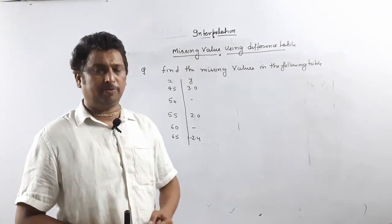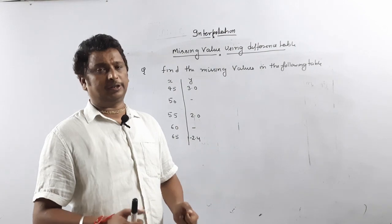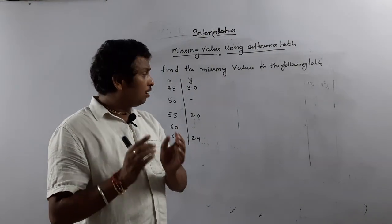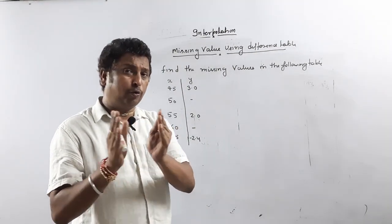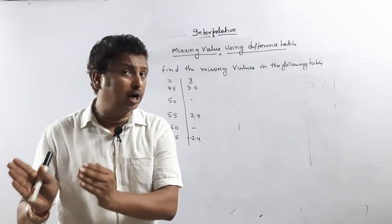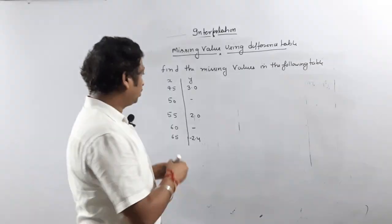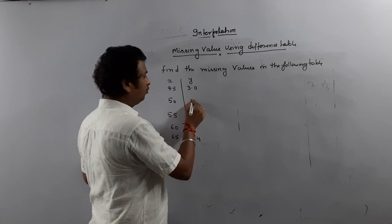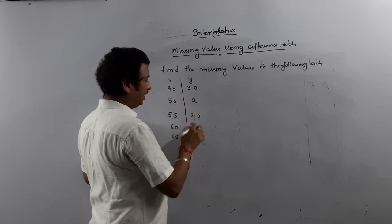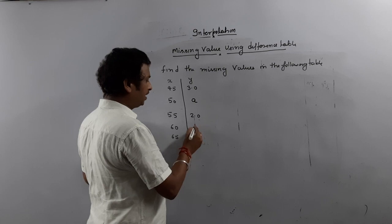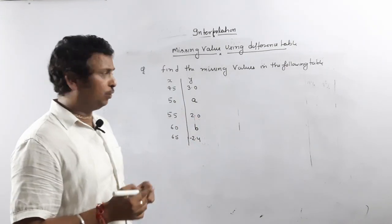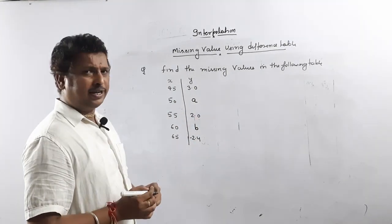And then take that third order difference equal to 0. This is the fundamental theorem for difference calculus — you have to go up to third order difference. So suppose here the missing value is A and here the missing value is B. Now I am going to calculate A and B values. See, it's very easy.